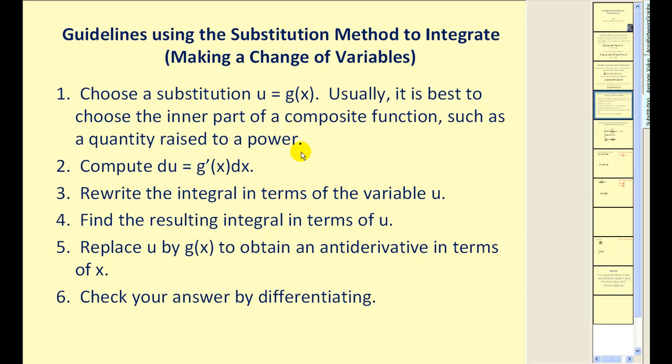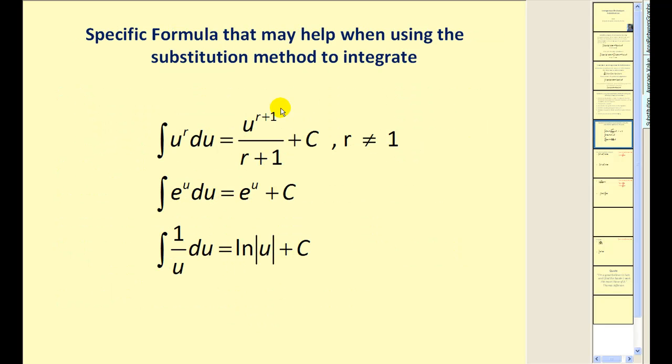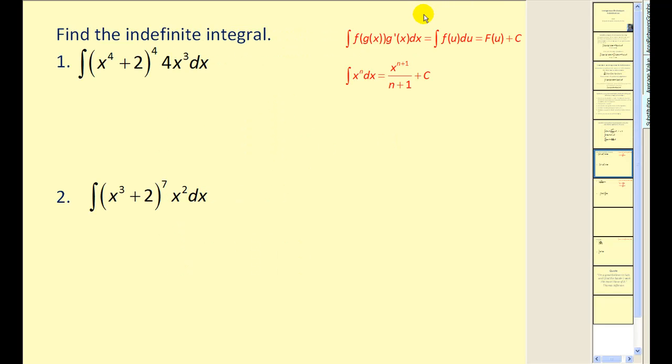Here are our guidelines. We're going to choose a substitution u = g(x), usually the inner part of a composite function. Then calculate differential u which is g'(x)dx. Write the integral, find the resulting integral, then replace u with g(x) to obtain our antiderivative, and check by differentiating. Here are some basic formulas that might help. Let's get started.